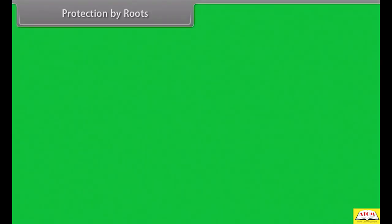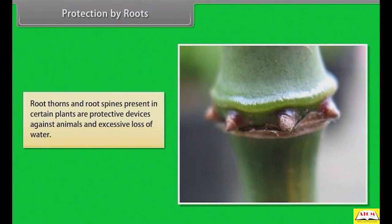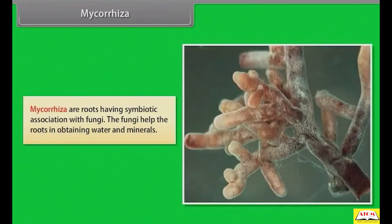Root thorns and root spines present in certain plants are protective devices against animals and excessive loss of water. Mycorrhizae are roots having a symbiotic association with fungi; the fungi help the roots in obtaining water and minerals.